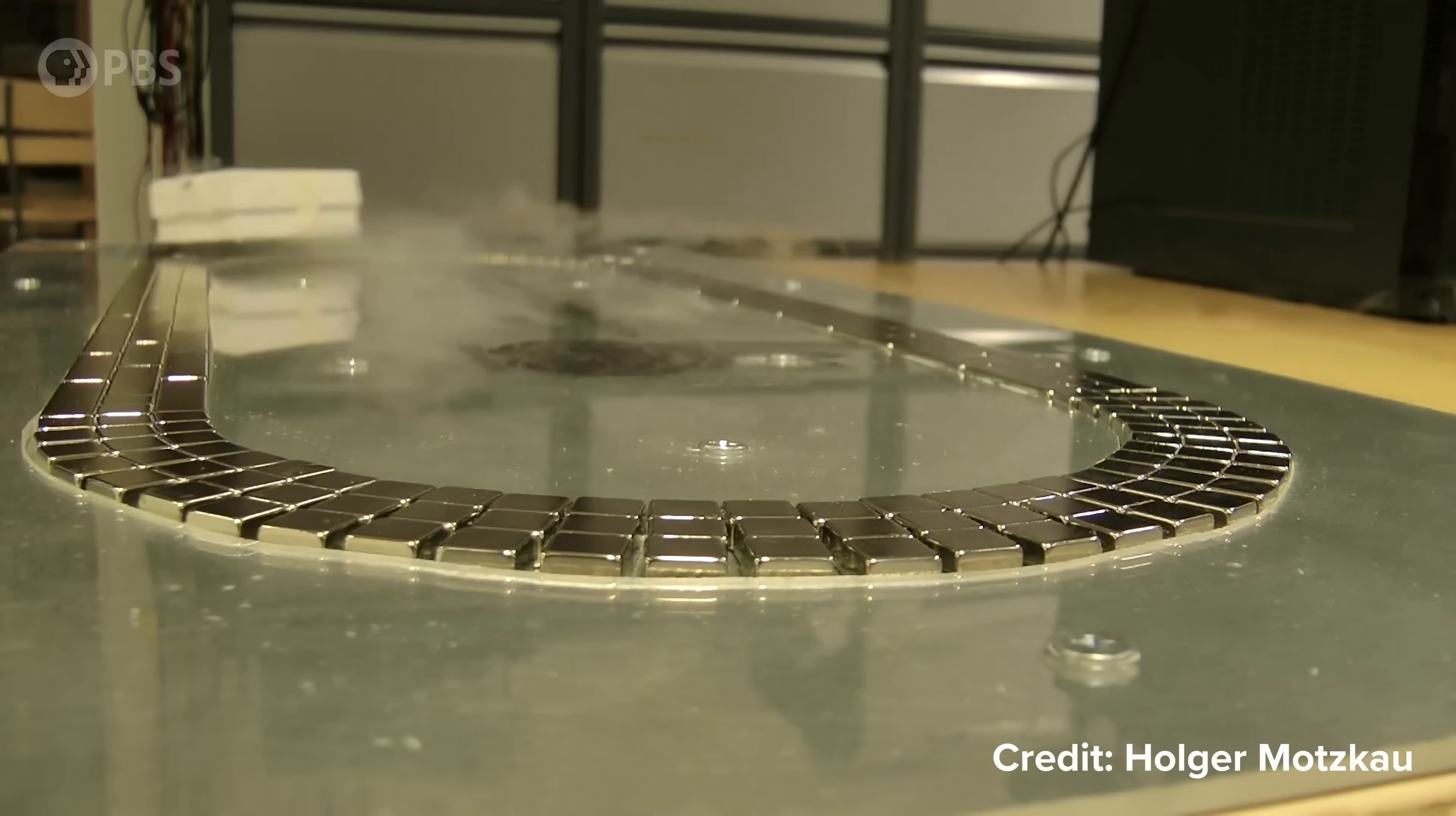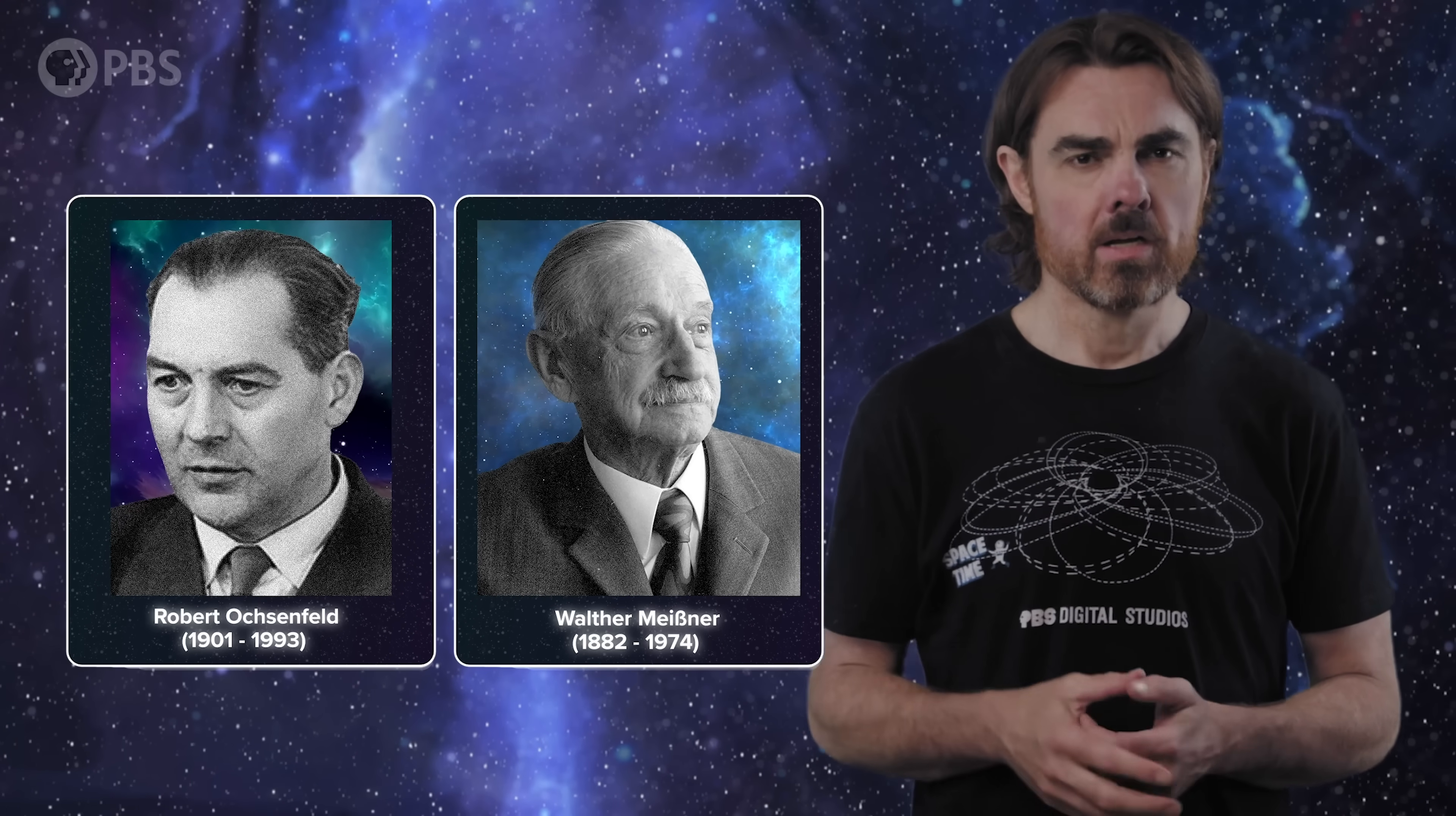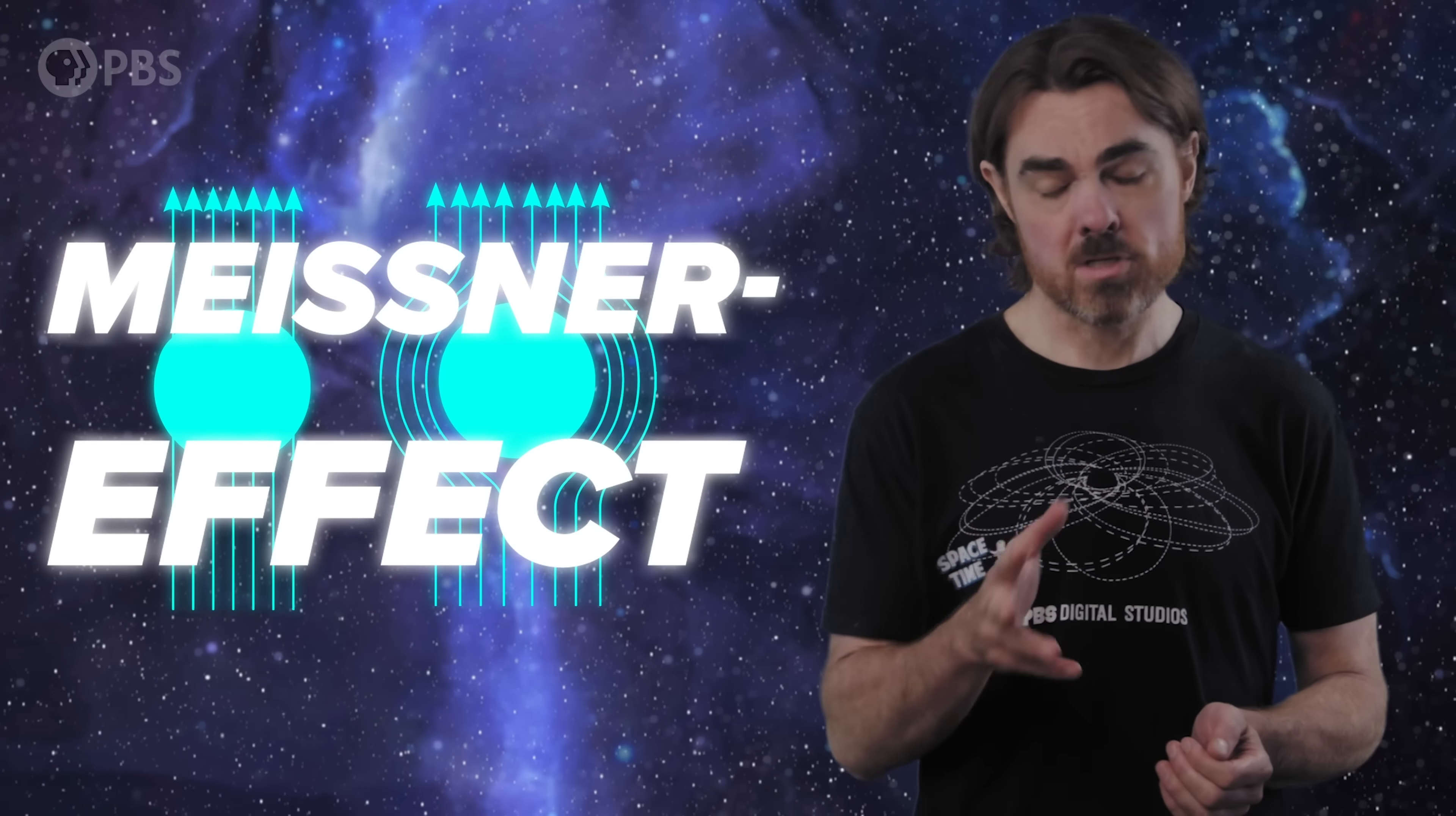Well, can make them hover. Fast forward to 1933, lots of people were messing around with this fun new physics toy, including Walter Meissner and Robert Ochsenfeld. They were the first to make a superconductor float above a magnet. This is the Meissner-Ochsenfeld effect, or more commonly these days just the Meissner effect. Sorry Robert.